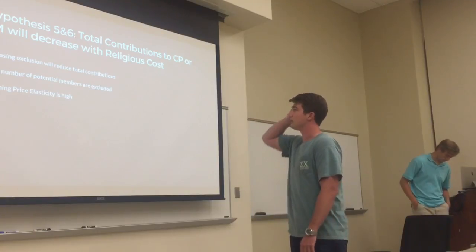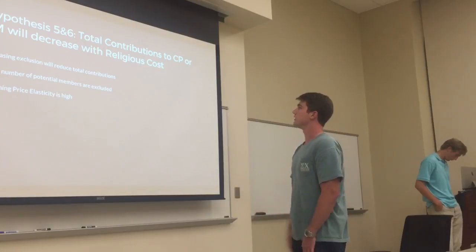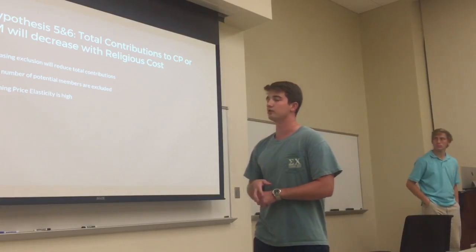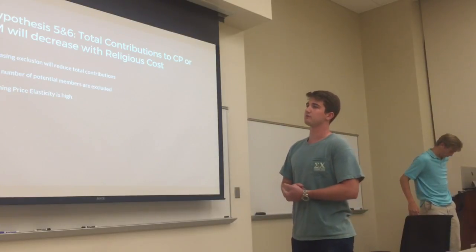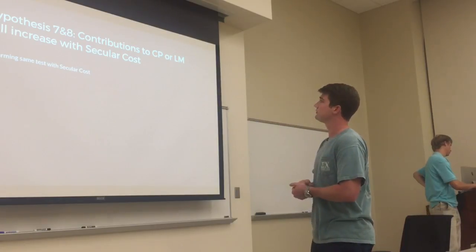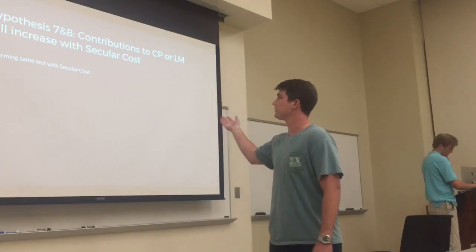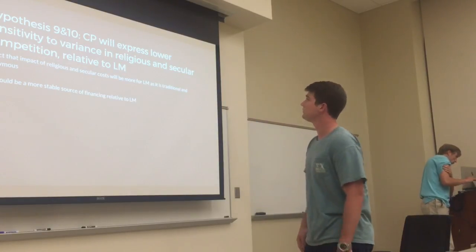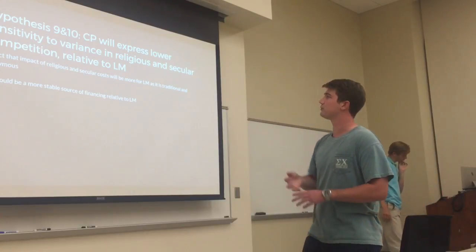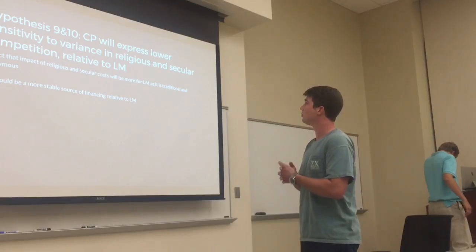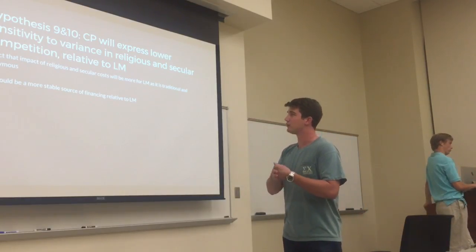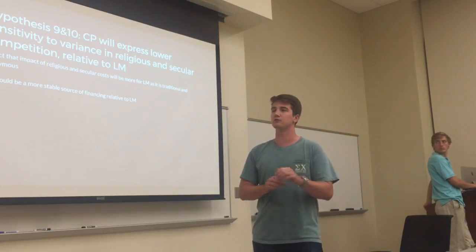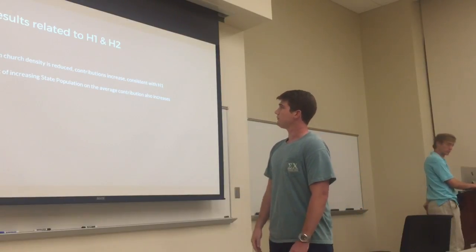Total contributions to the Cooperative Program or Lottie Moon will decrease with religious costs — increasing exclusion will reduce total contributions, as a large number of potential members are excluded, assuming price elasticity is very high. This is the opposite of hypotheses one and two. Contributions to the Cooperative Program will increase with secular costs. One more hypothesis: we would expect the impact of religious and secular cost to be more pronounced for Lottie Moon, as it is traditional and anonymous, compared to the Cooperative Program, which should be a more stable source of financing.